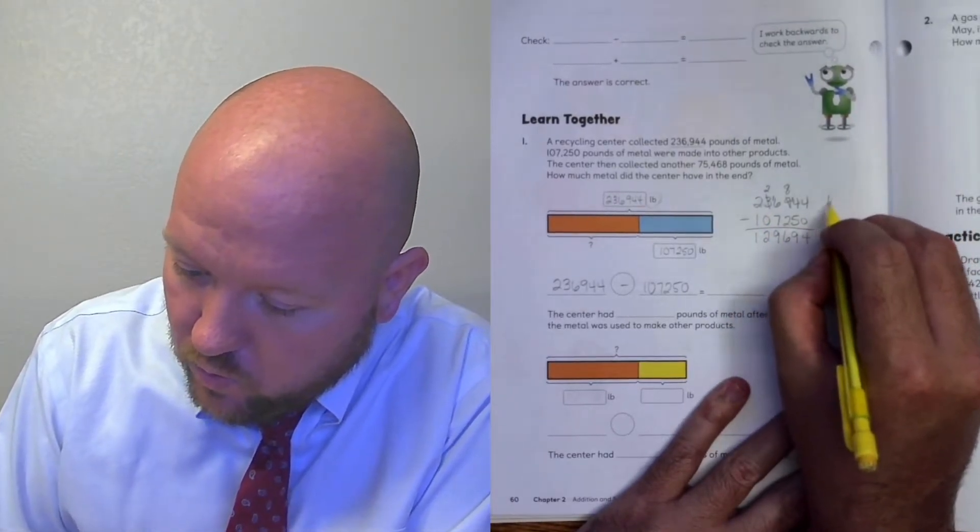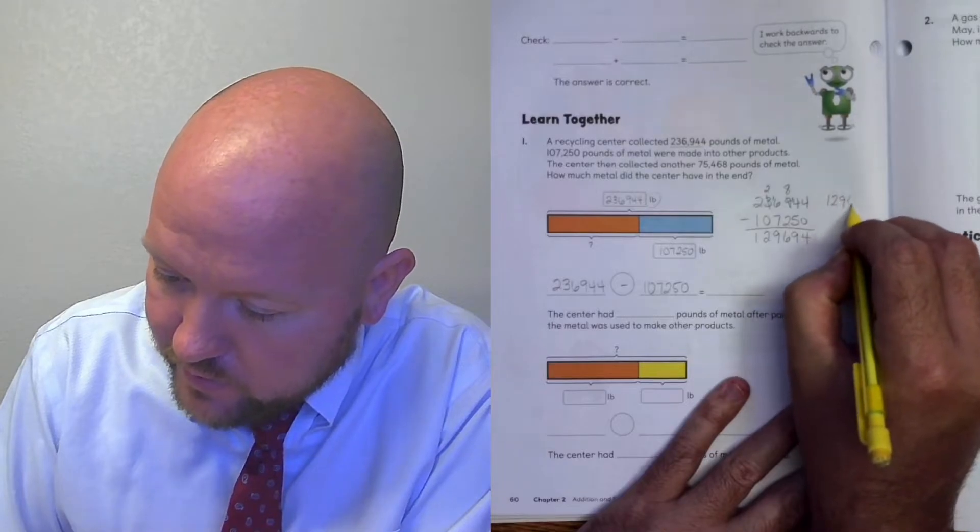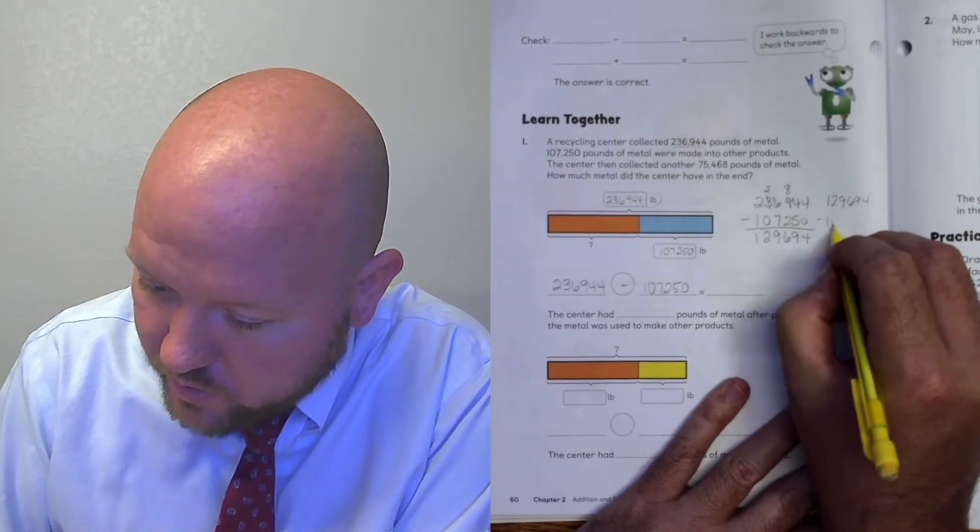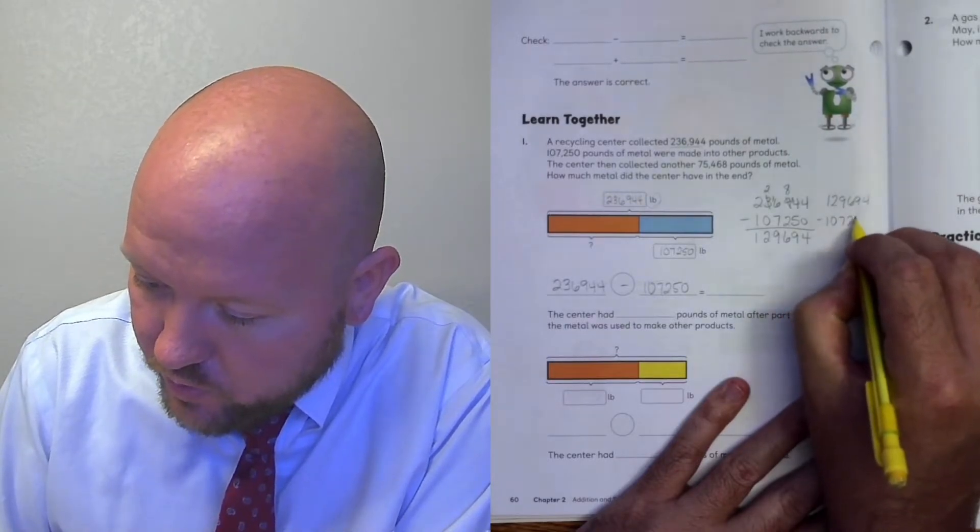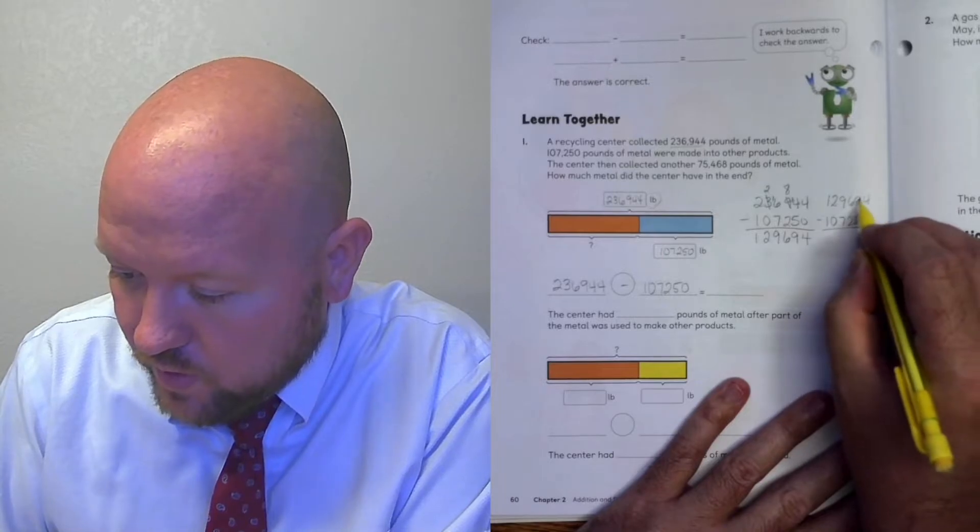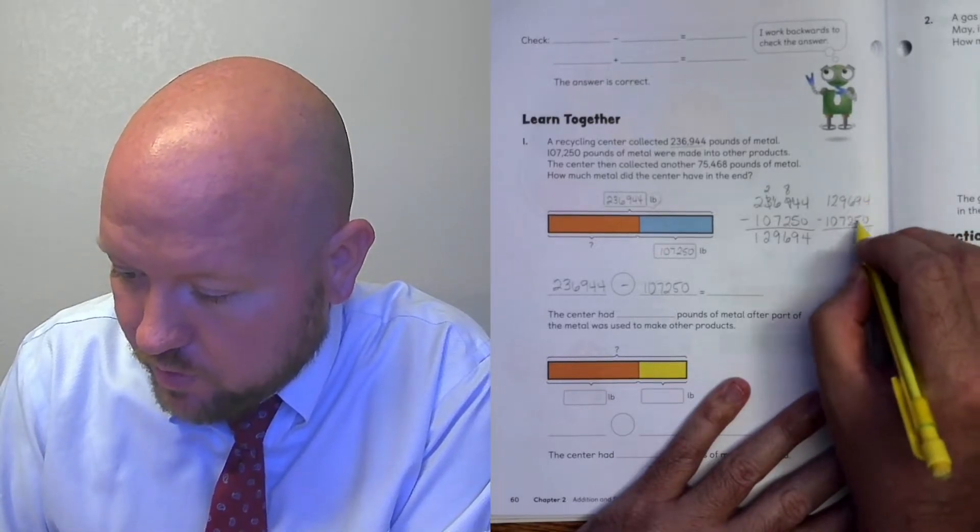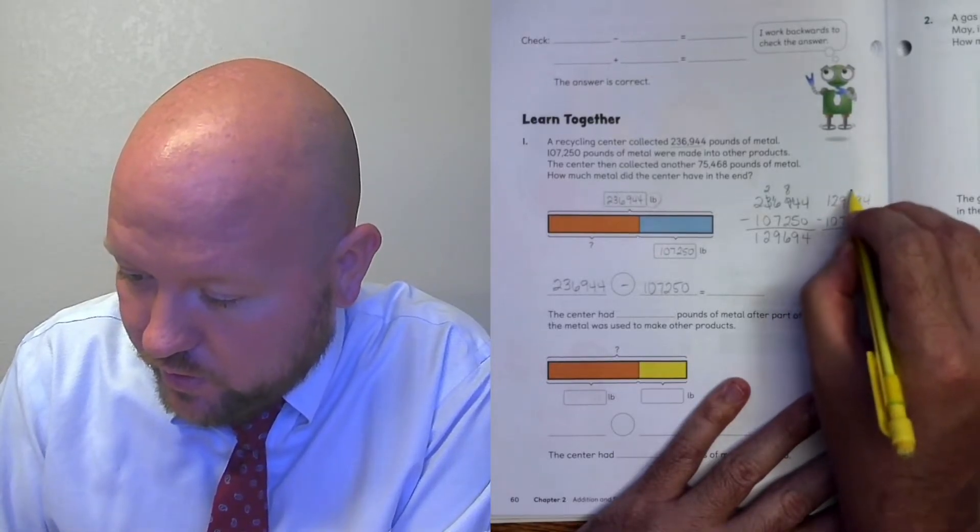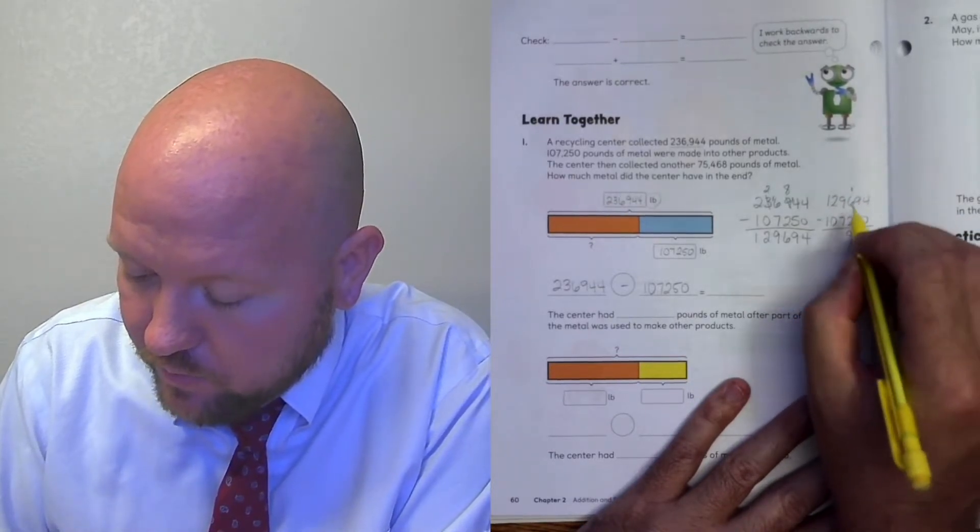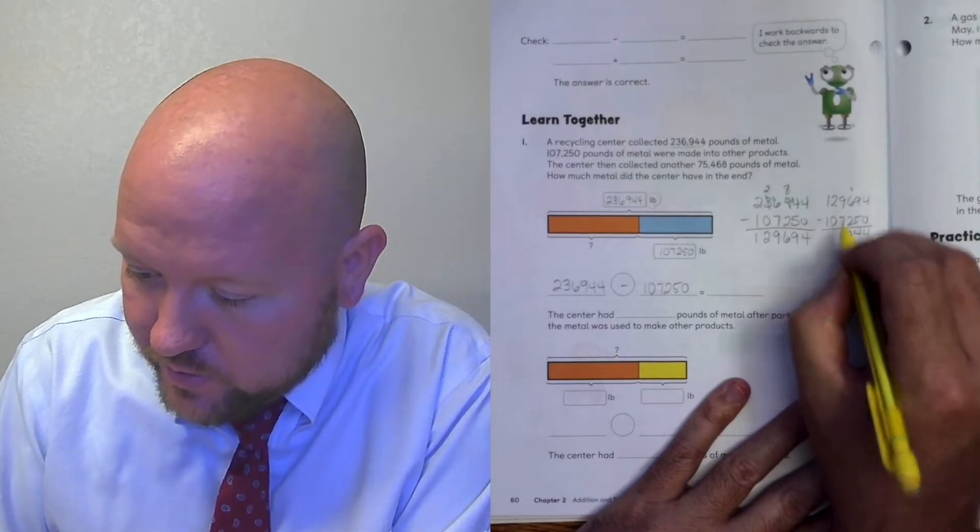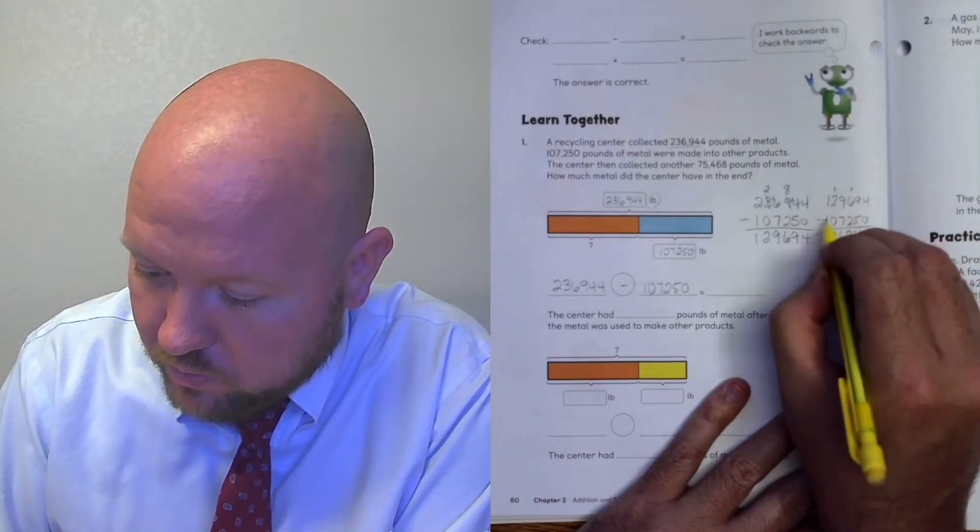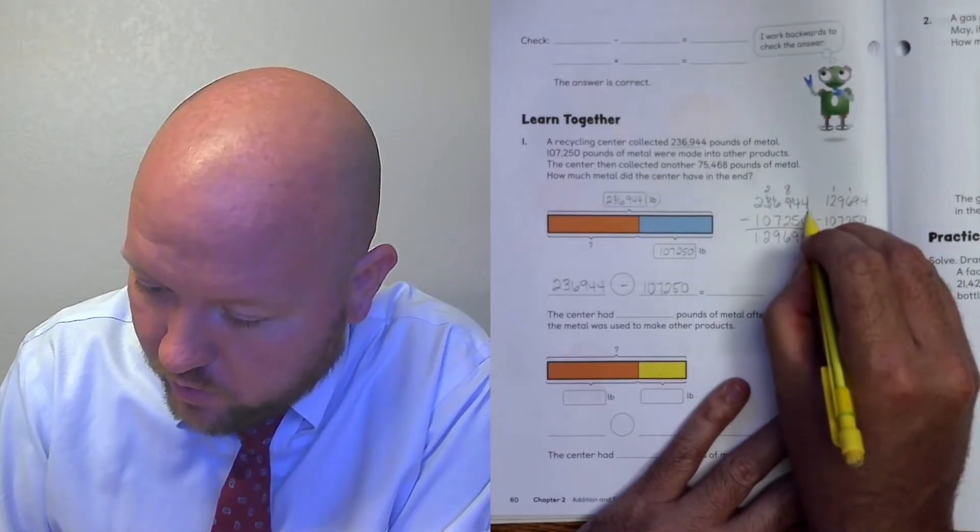So let's go ahead and subtract. So here, 4 minus 0 is 4. 4 minus 5, I need to regroup. 14 minus 5 is 9. 8 minus 2 is 6. 6 minus 7, I need to regroup. This becomes a 2. This becomes a 16. 16 minus 7 is 9. 2 minus 0 is 2. 2 minus 1 is 1. All right. Let's check that. 129,694 plus 107,250. 4 plus 0 is 4. 9 plus 5 is 14. 6 and 2 make 8 plus 1 is 9. 9 plus 7 is 16. 1 plus 2 is 3. 1 plus 1 is 2. Those check out.